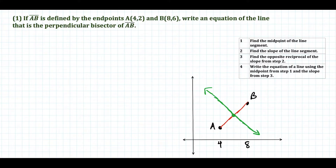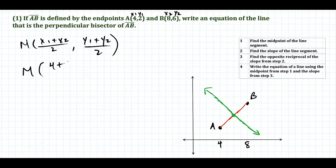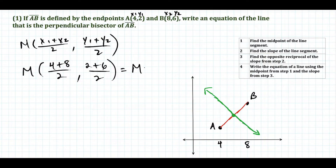The first step is to find the midpoint. We label the first point as (x₁, y₁) and the second as (x₂, y₂). The midpoint x-value is the sum of the x-coordinates divided by 2, and the y-value is the sum of the y-coordinates divided by 2. So the midpoint of AB is (4+8)/2 , (2+6)/2 = (6, 4). That lands exactly where we'd expect on the graph.